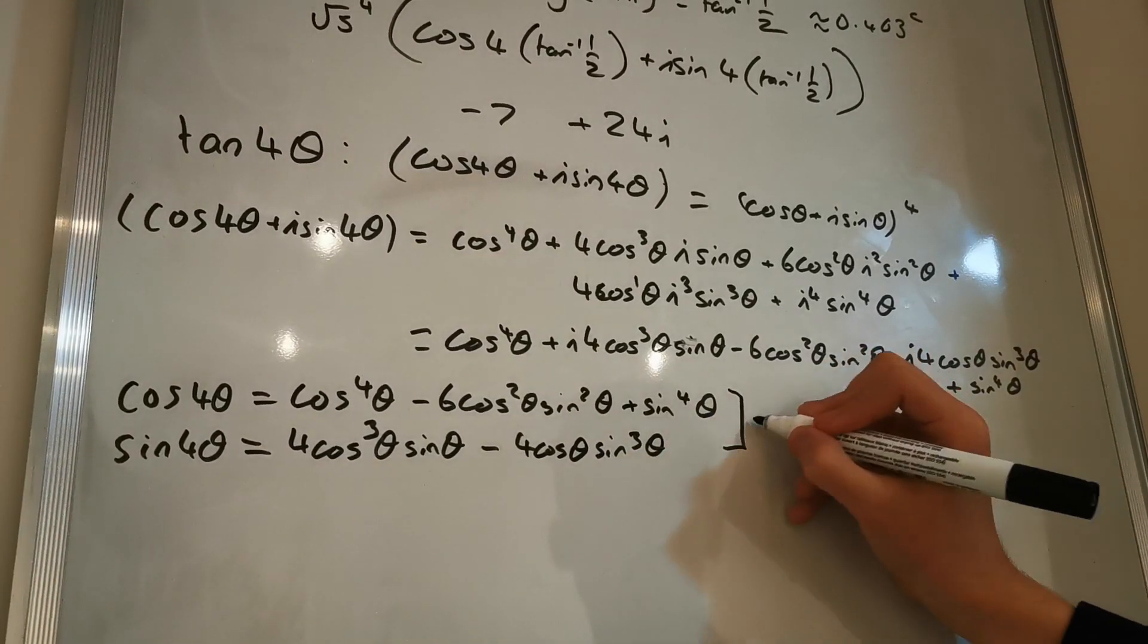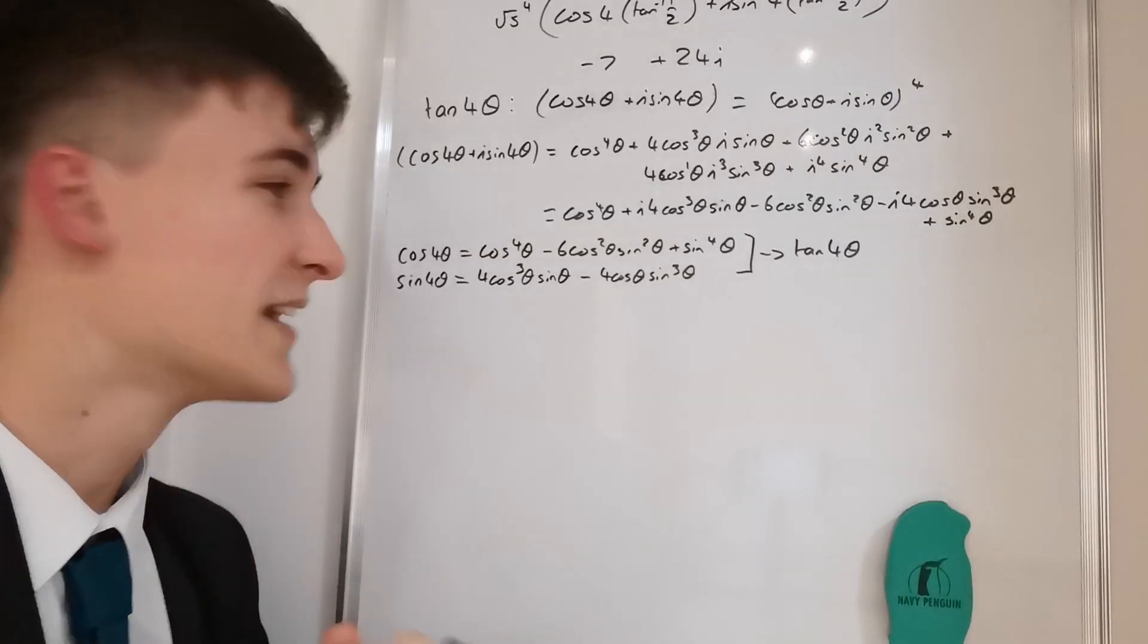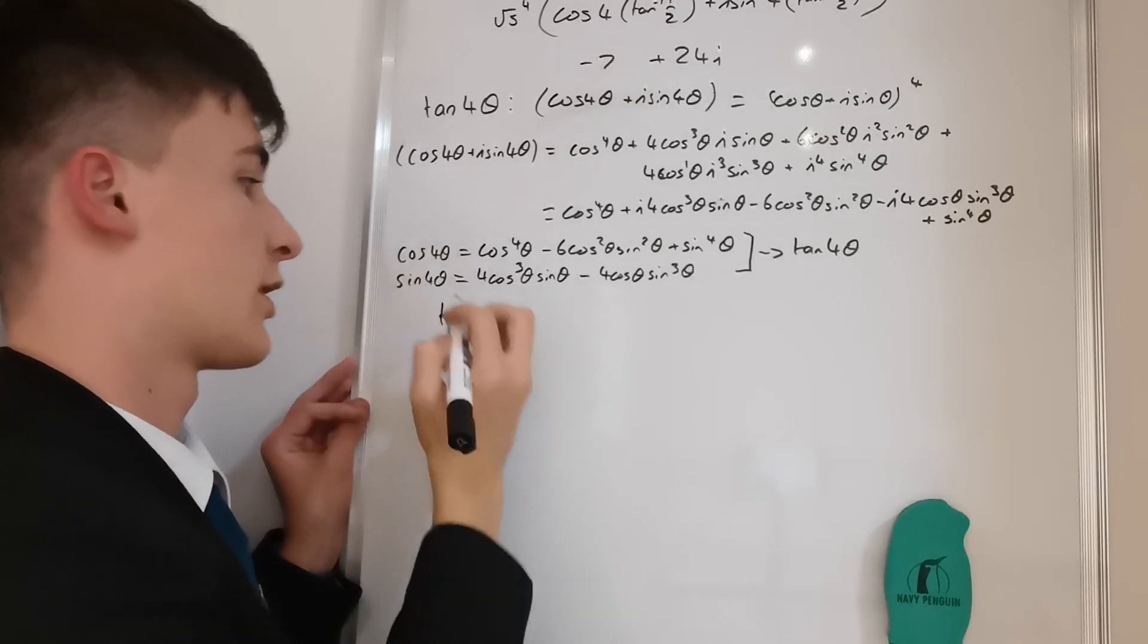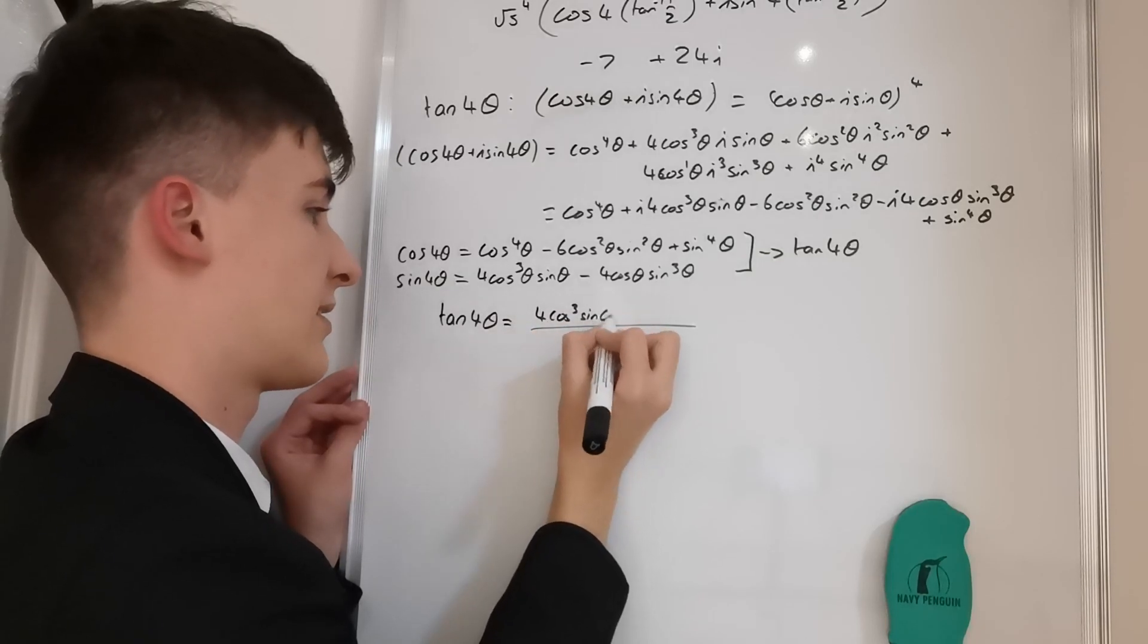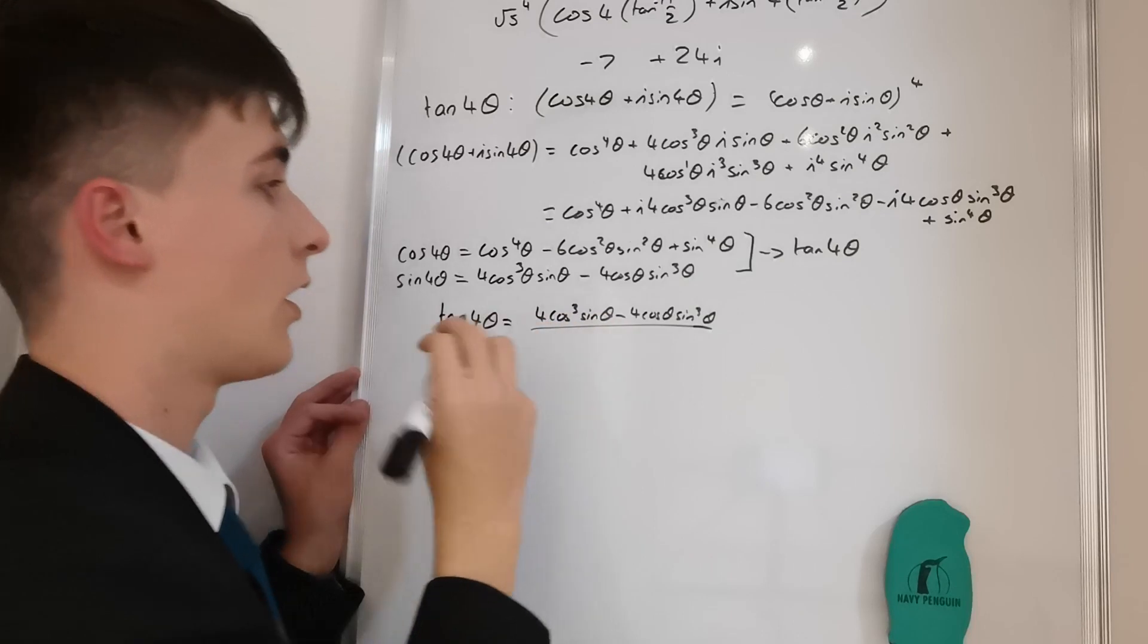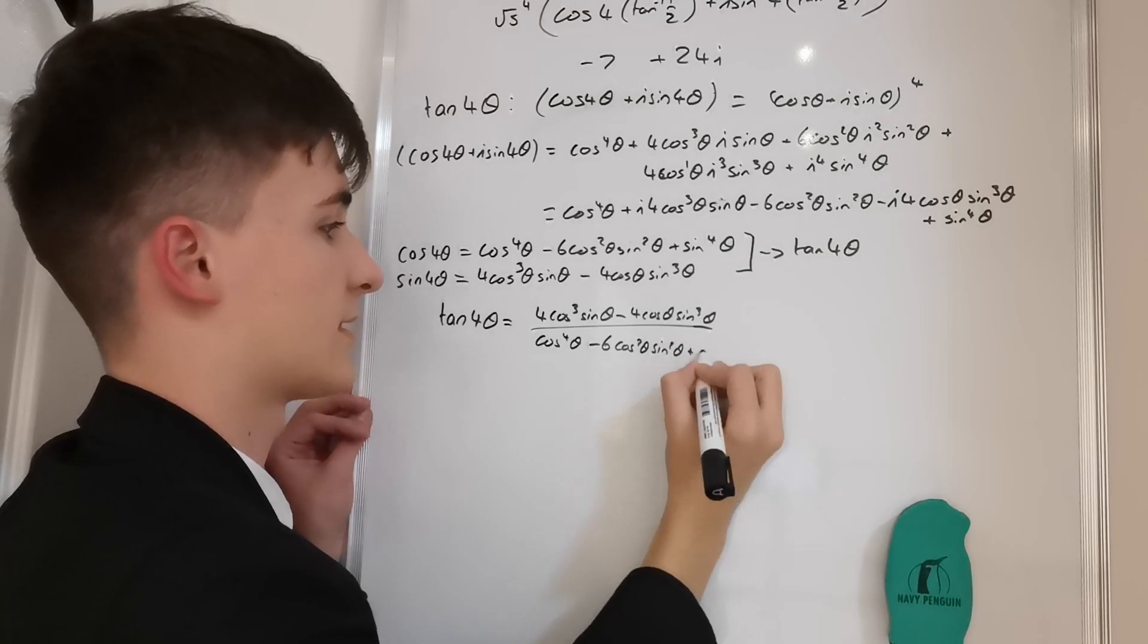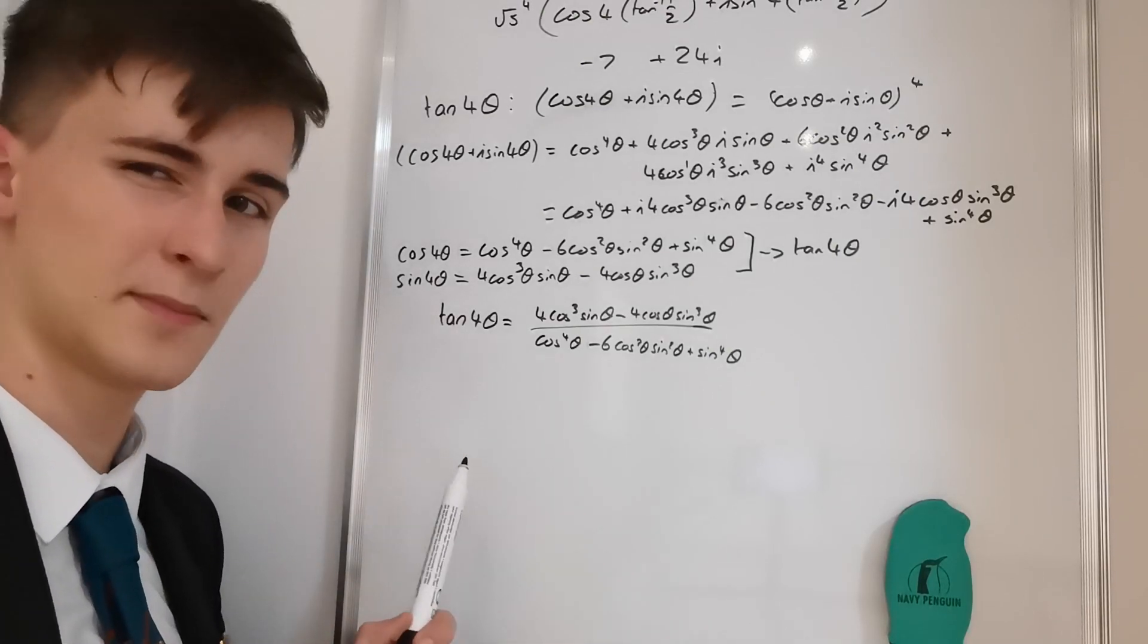Now we can take these and we can turn them into tan(4θ). So tan(4θ) is equal to sine over cos. So (4cos³(θ) sin(θ) - 4cos(θ) sin³(θ)) divided by (cos^4(θ) - 6cos²(θ) sin²(θ) + sin^4(θ)). And that is what tan(4θ) is equal to, but we can write this in simpler terms.